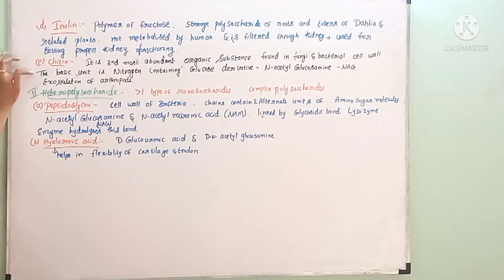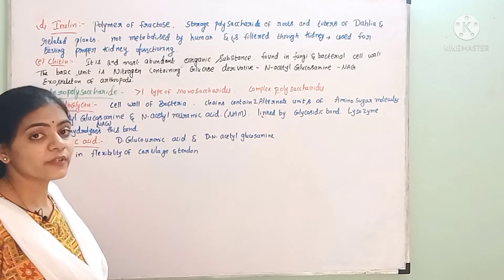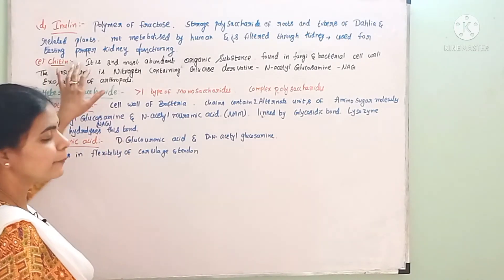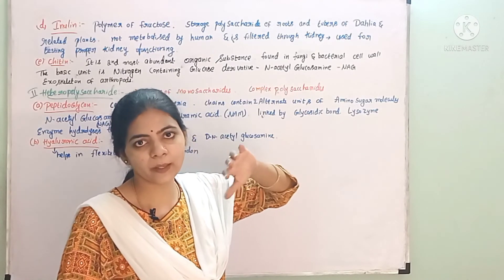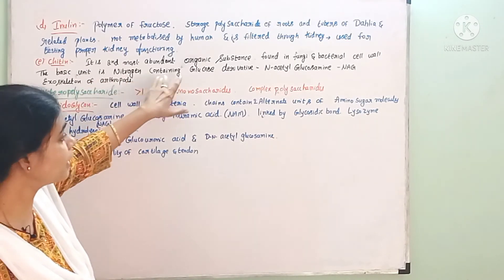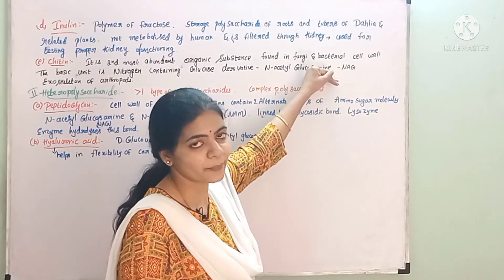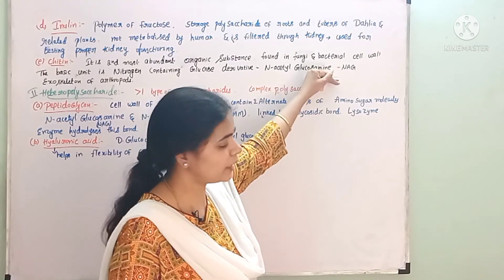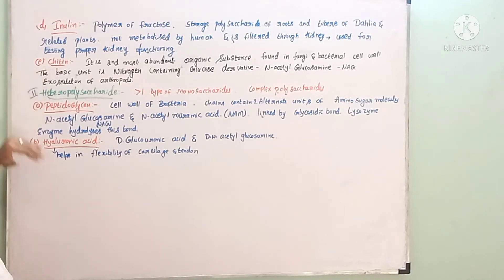The last homopolysaccharide is chitin. It is the second most abundant organic substance on earth — the first is cellulose. Chitin is found in the cell walls of fungi and bacteria. Its main basic unit is a nitrogen-containing glucose derivative called N-acetyl glucosamine (NAG).